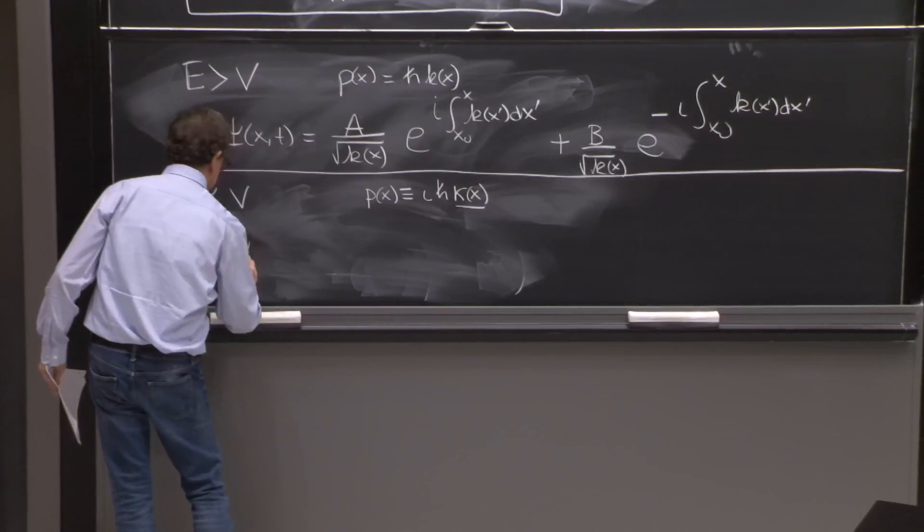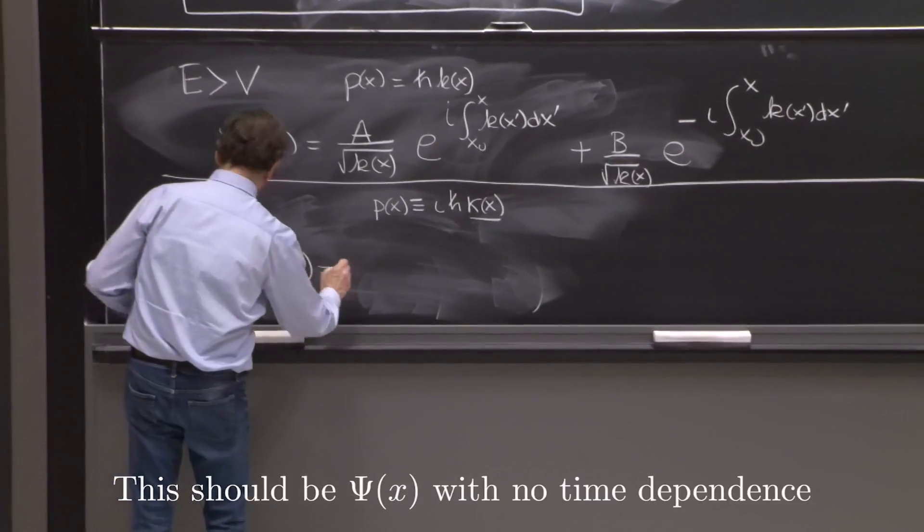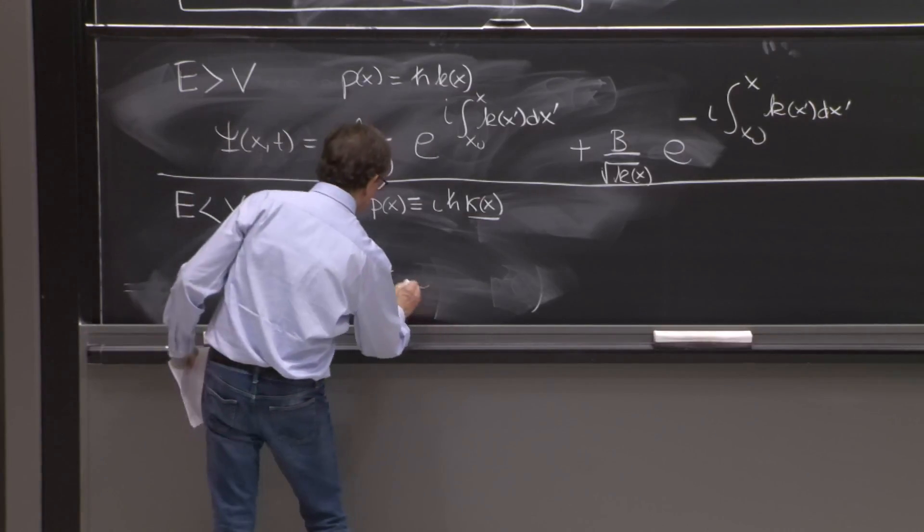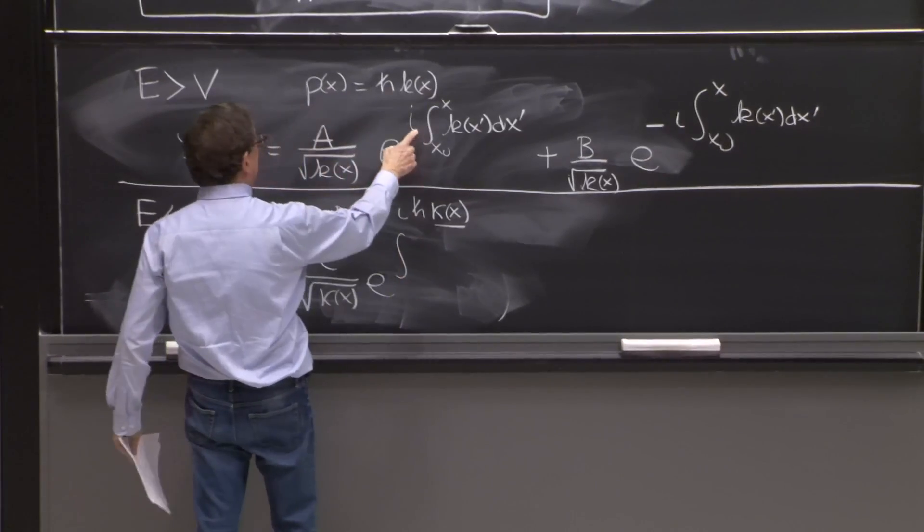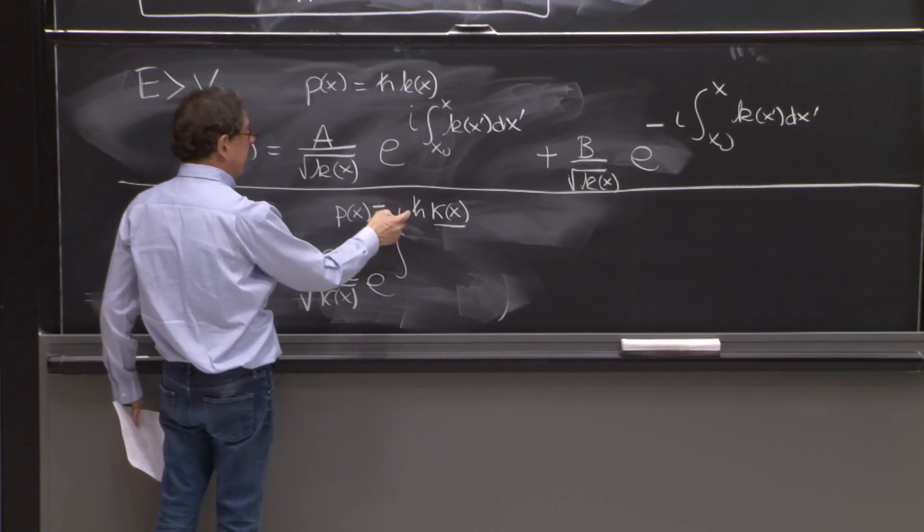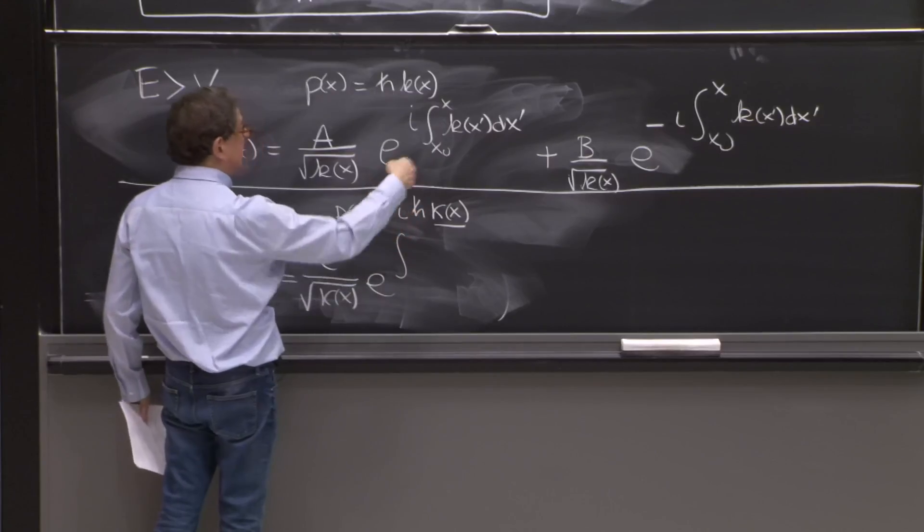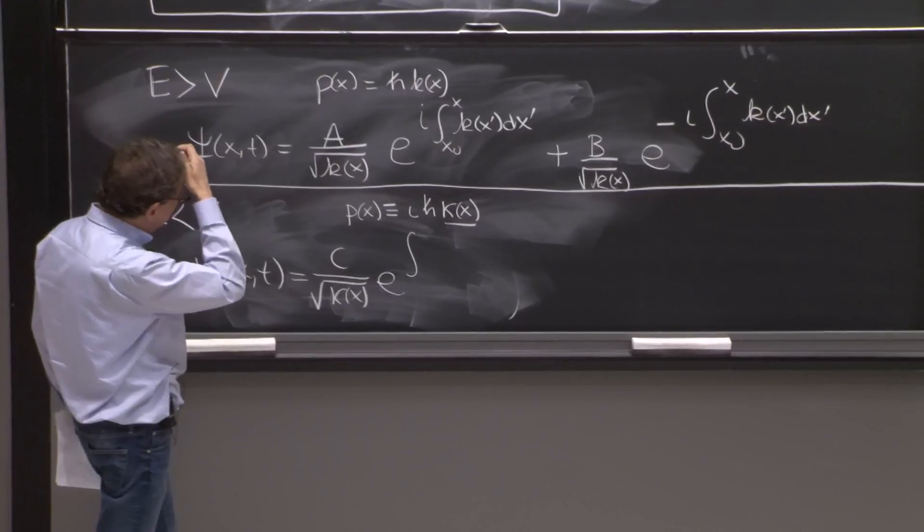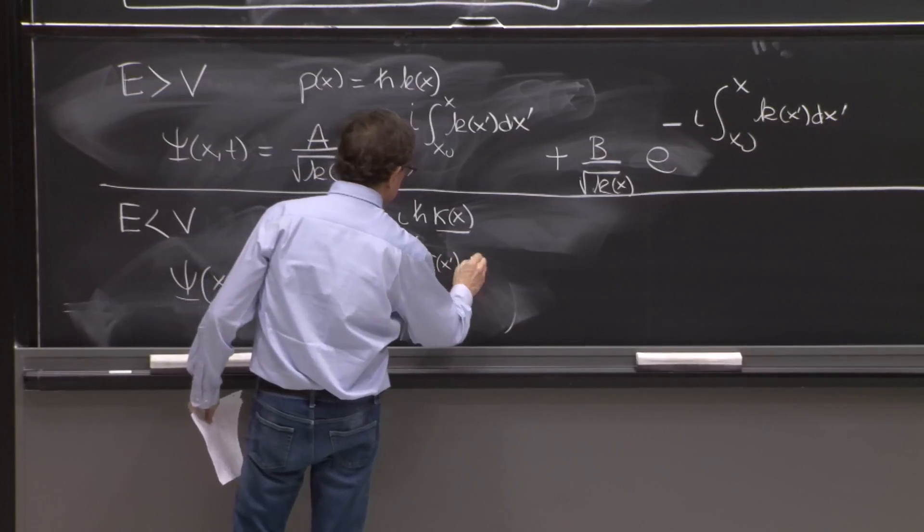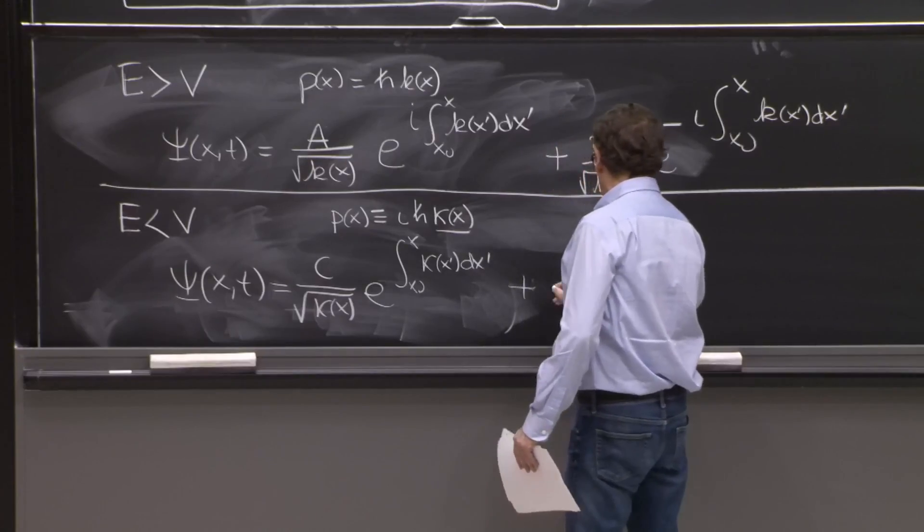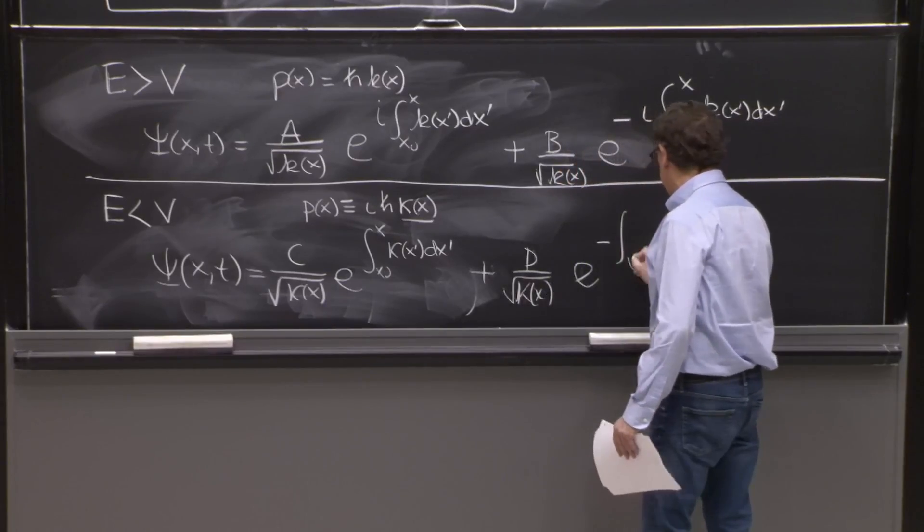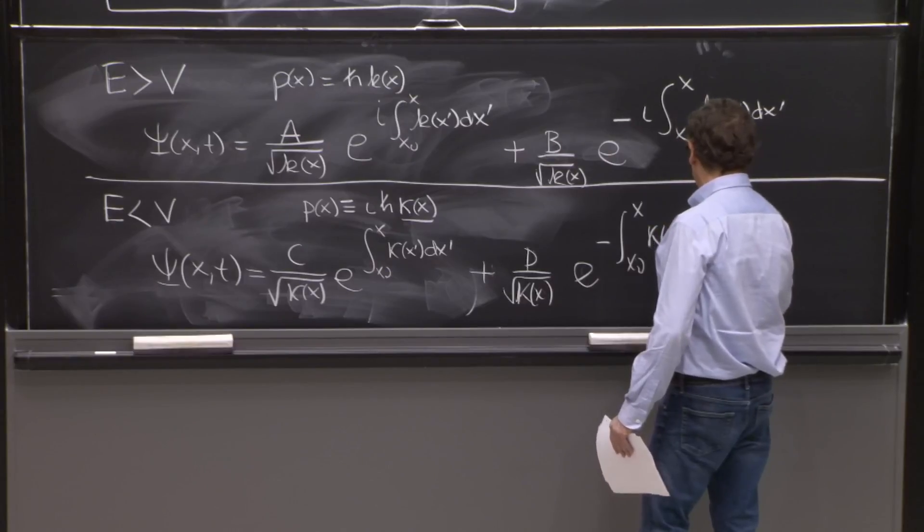So what is the psi of x and t is equal to a constant c over square root of kappa of x, e to the, the i will disappear. And there will be two solutions, one with plus, one with minus. That's the reason I don't have to be very careful in saying whether this is i or minus i. There's anyway two solutions. At this stage, we don't need to worry. So this is from x0 to x kappa of x prime dx prime, plus d over square root of kappa of x, e to the minus x0 to x kappa of x prime dx prime.